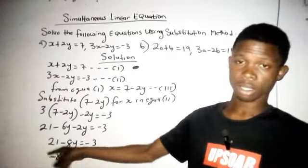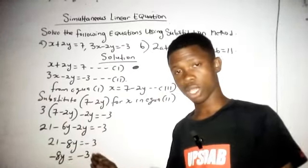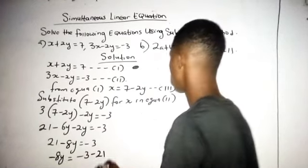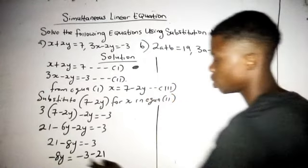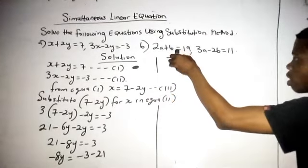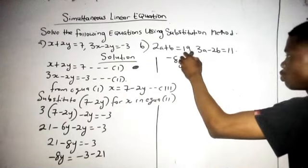Then in my right hand side I have minus 3. So if this 21, this 21 that is here, crosses over, it will become minus 21. So what I'm going to have is minus 8y. Minus 3 minus 21 will be minus 24.